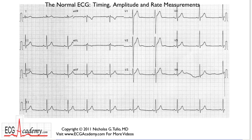Hi, this is Dr. Nick from the ECG Academy, and we're going to continue this discussion of heart rate measurements. We're going to pick up where we left off with the last tracing. We've already established that at a normal paper speed, the paper is running at 25 millimeters per second, and that's our time reference. How do you translate that timing into beats per minute?